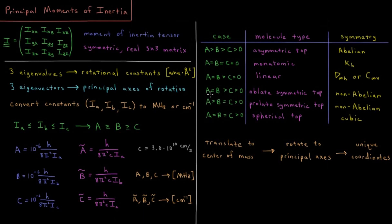We have two cases where two rotational constants are equal, one is different, and all three are non-zero. The case where the unique one is the smallest is called an oblate symmetric top — the Earth is an oblate symmetric top, an oblate spheroid squished at the poles and bulging at the equator. Alternatively, a prolate symmetric top has the unique rotational constant as the larger one — more like a cylinder rather than a disc. Both have non-abelian, non-cubic point groups.